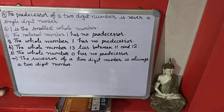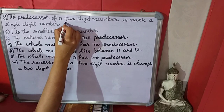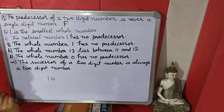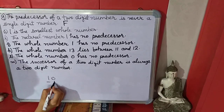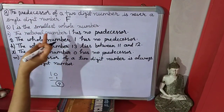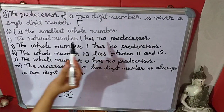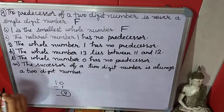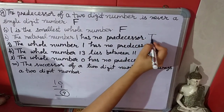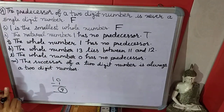Part G: the predecessor of a 2-digit number is never a single-digit number. This is false. For example, take the 2-digit number 10. Its predecessor is 9, which is a single-digit number. So the statement is false. Next: 1 is the smallest whole number — false, because 0 is the smallest whole number. Next: the natural number 1 has no predecessor — true, because 1 is the smallest natural number, so there is no predecessor before it.